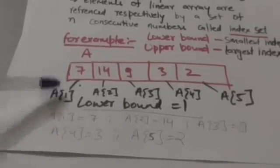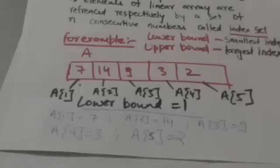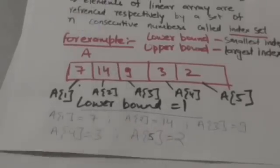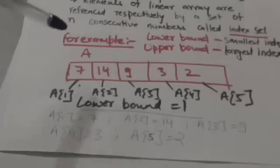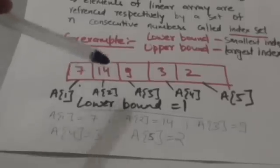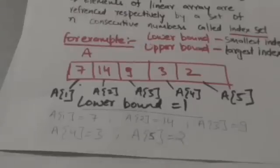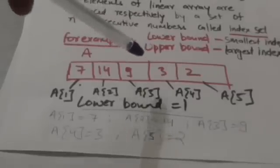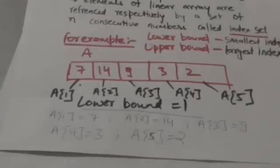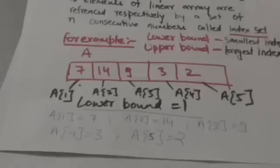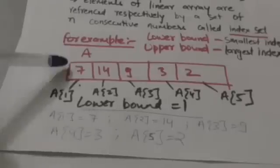Suppose the lower bound of linear array A is 1. Then the first element of array A will be denoted by A1, the second element of array A will be denoted by A2, the third element of array A will be denoted by A3, and so on, because the lower bound of this array A is 1.